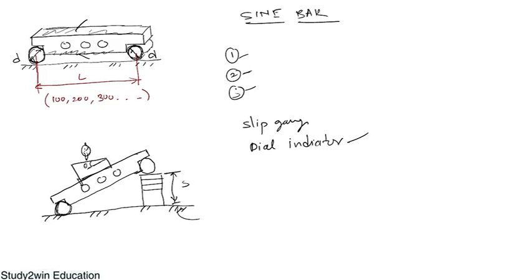The height of the slip gauge is decided based on the dial gauge reading. I keep the work piece on the sine bar, lift one end using the slip gauge, and check the dial gauge reading at two points. If one end is lower than the other, I raise the sine bar end by adding more slip gauge height. When the two dial gauge readings are exactly the same, the work piece surface is exactly horizontal with respect to the surface table. Our aim is to make this surface exactly parallel to the surface table.